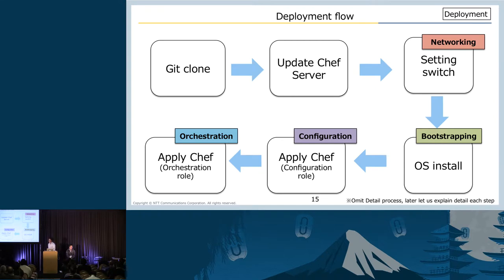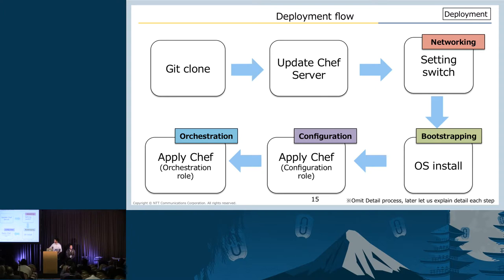This is our deployment flow. The first step is cloning code from Git, then updating the Chef server, setting the switch, OS install, applying Chef for configuration, and applying Chef for orchestration. All processes are automated by Jenkins.